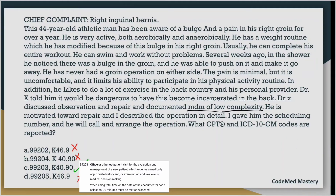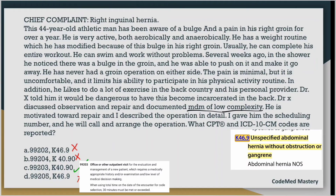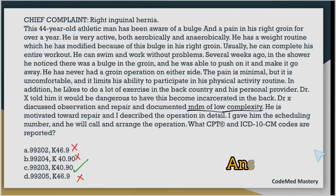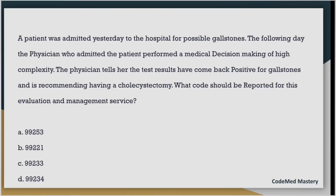You can also eliminate options on the basis of the ICD code. K46.9 is for unspecified abdominal hernia without obstruction or gangrene, and K40.90 is for unilateral inguinal hernia. In our question it is a right inguinal hernia, so we must code K40.90 — the condition is specified. K46.9 is for an unspecified abdominal hernia, so we eliminate it. The correct ICD code is K40.90.